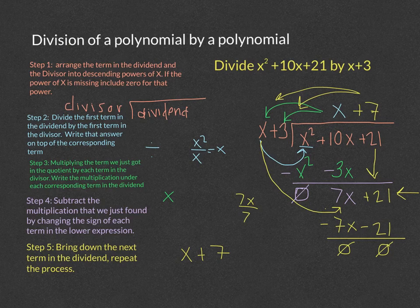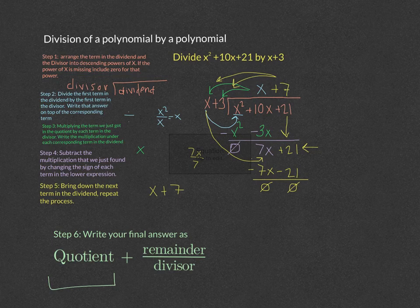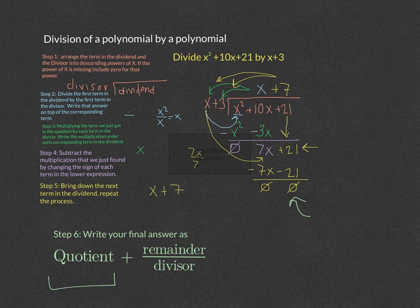Most of the time the divisor will not go in evenly into the dividend, so you will end up with a remainder. If you have a remainder left over, you write your final answer as the quotient plus the remainder over the divisor — the expression you were originally dividing by. Let's look at one more long division of polynomials problem.